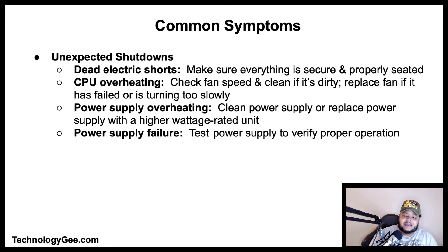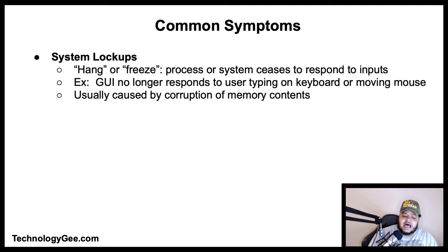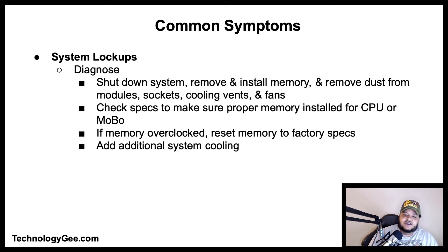Another symptom is system lockup, also known as a hang or freeze. This occurs when a process or system ceases to respond to inputs — a typical example is when a computer's GUI no longer responds to the user typing on the keyboard or moving the mouse. System lockups are typically caused by corruption of memory contents. To diagnose a system lockup, shut down the system, remove and reinstall memory, and remove dust from the modules, sockets, cooling vents, and fans.